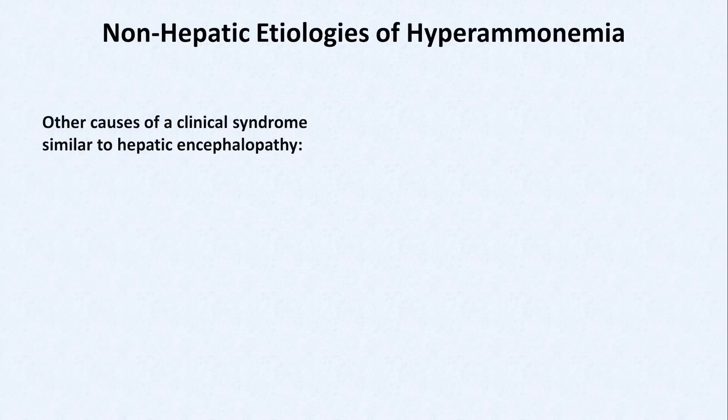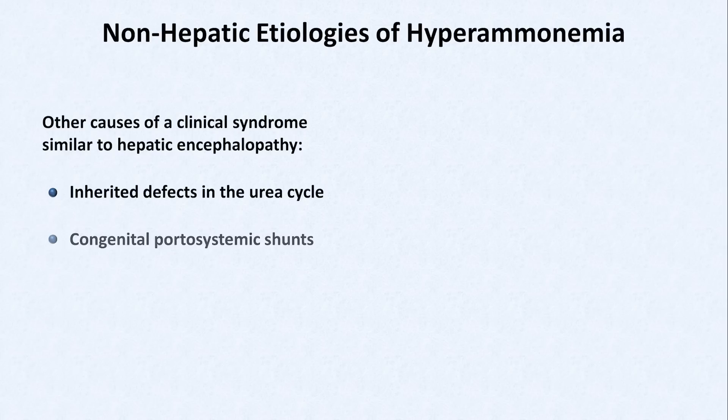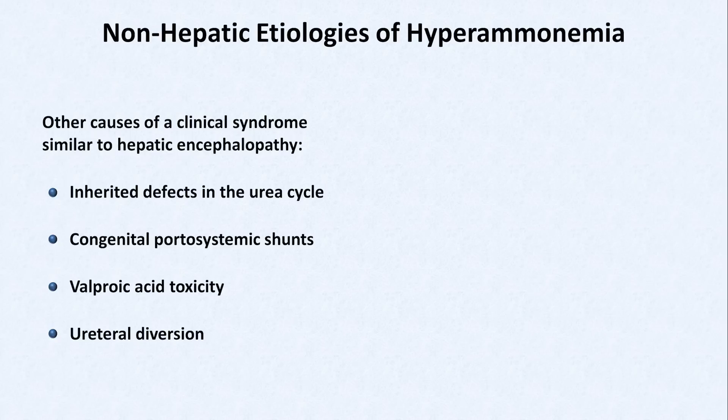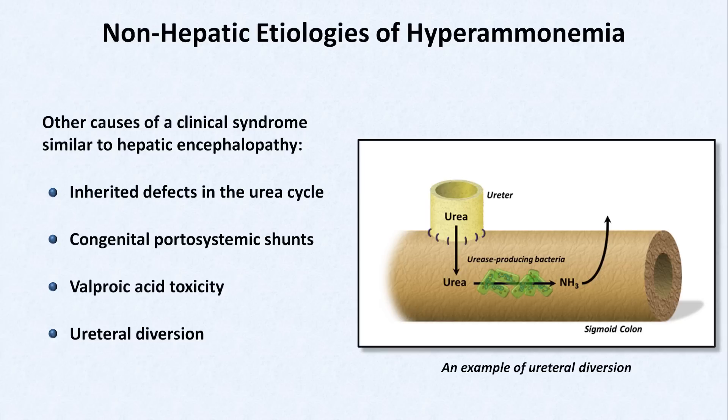It's important to point out that a person does not need liver disease at all to suffer from encephalopathy related to high ammonia levels. Other causes of a clinically similar syndrome include inherited defects in the urea cycle, congenital portosystemic shunts, a side effect of the medication valproic acid, and some ureteral diversion procedures in which the urinary system is surgically connected to the GI tract. In this last case, urease-producing gut bacteria break urea in the urine back down to ammonia, which gets reabsorbed through the colonic mucosa.